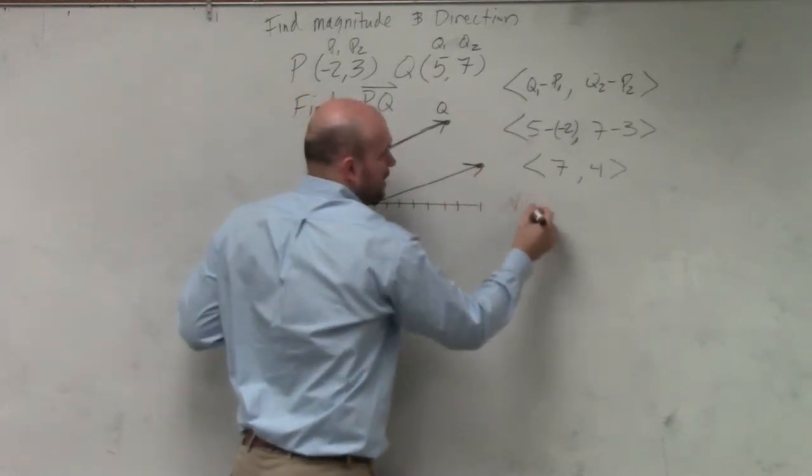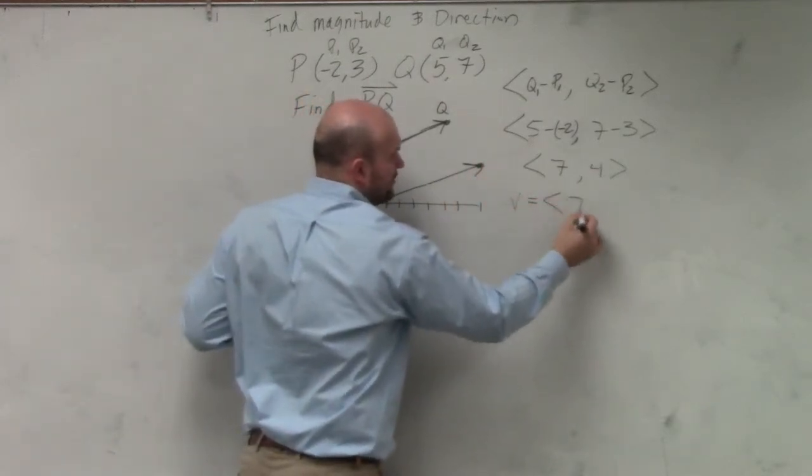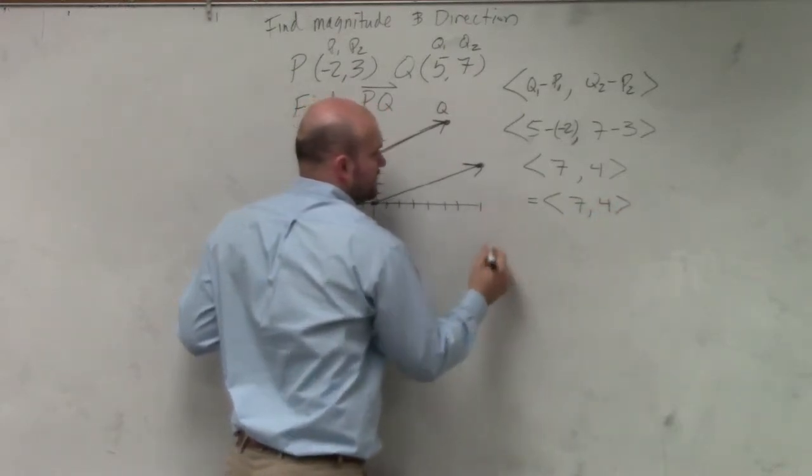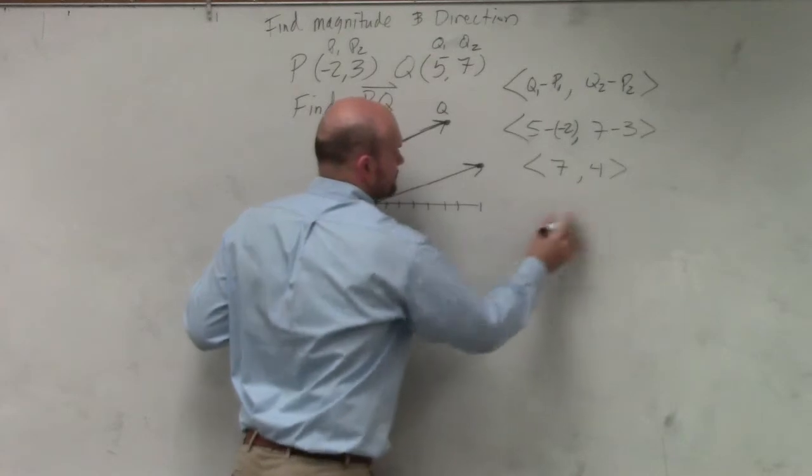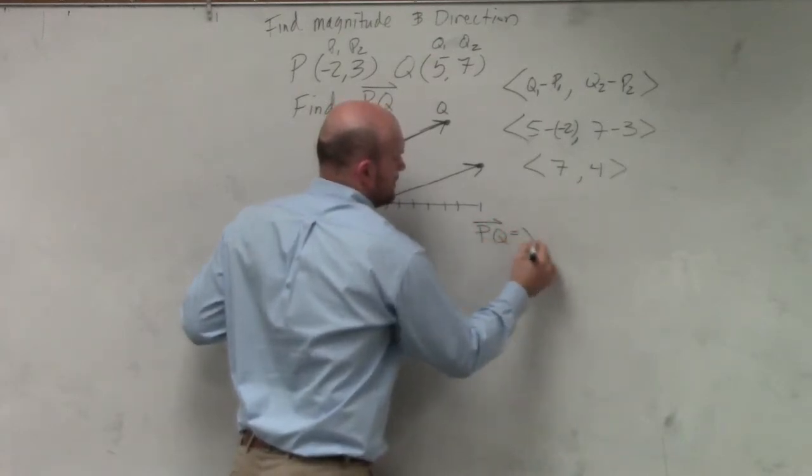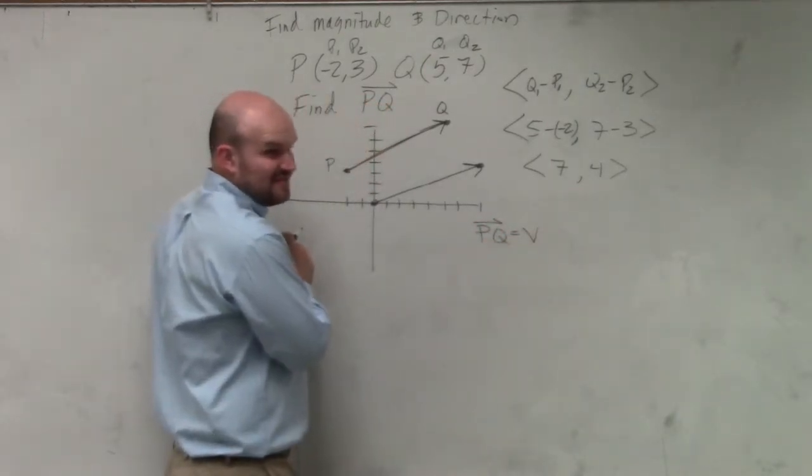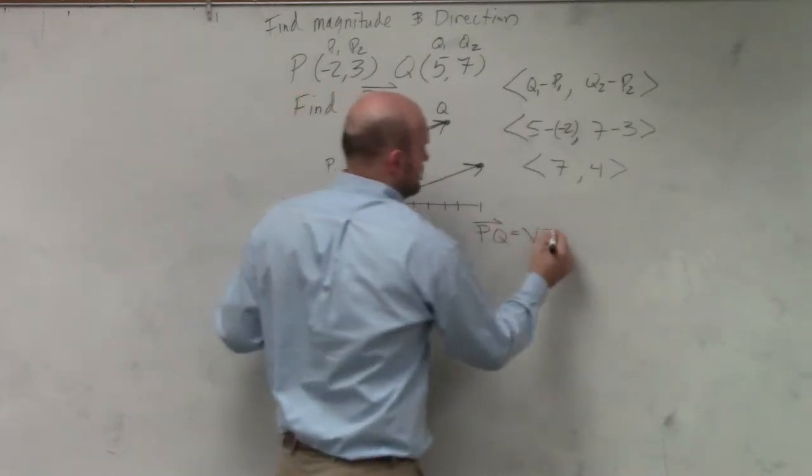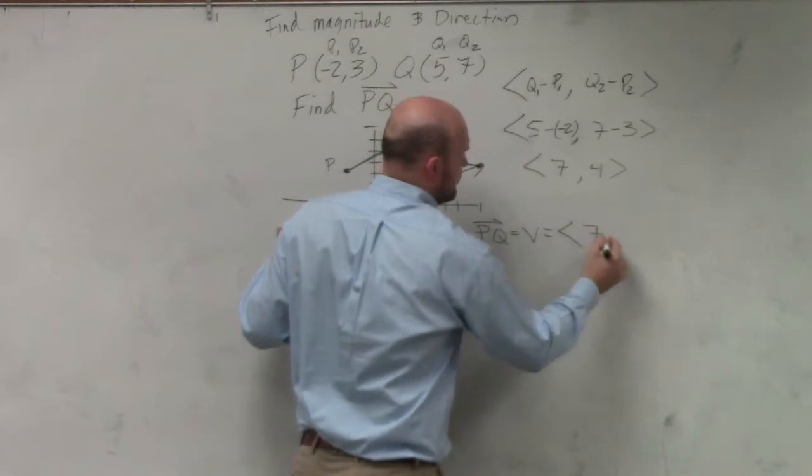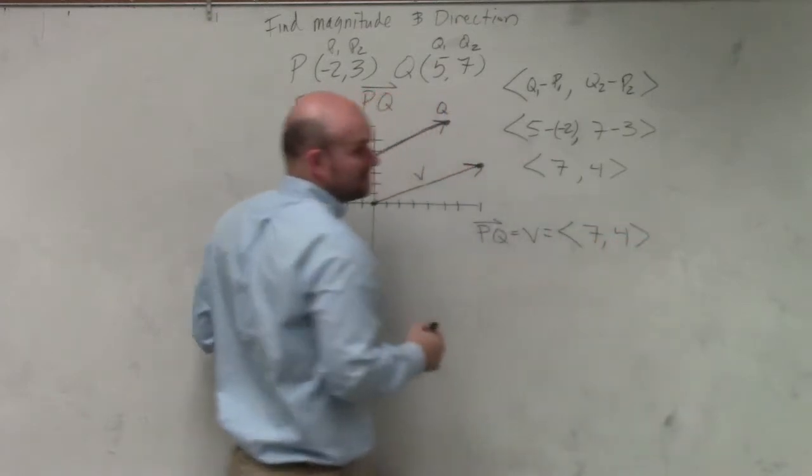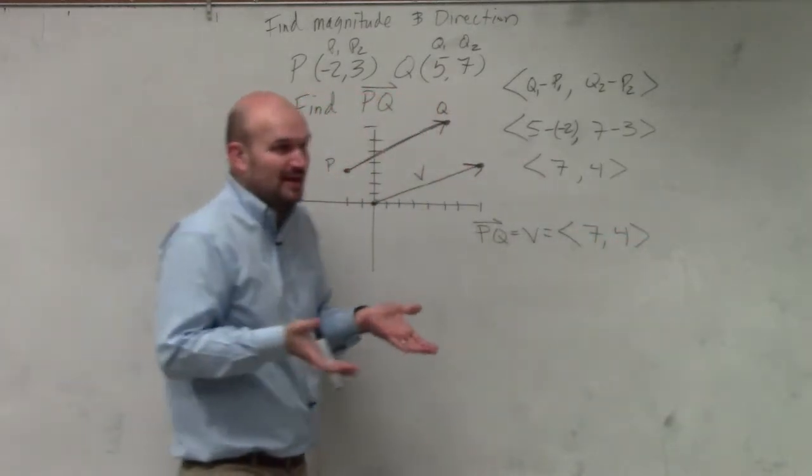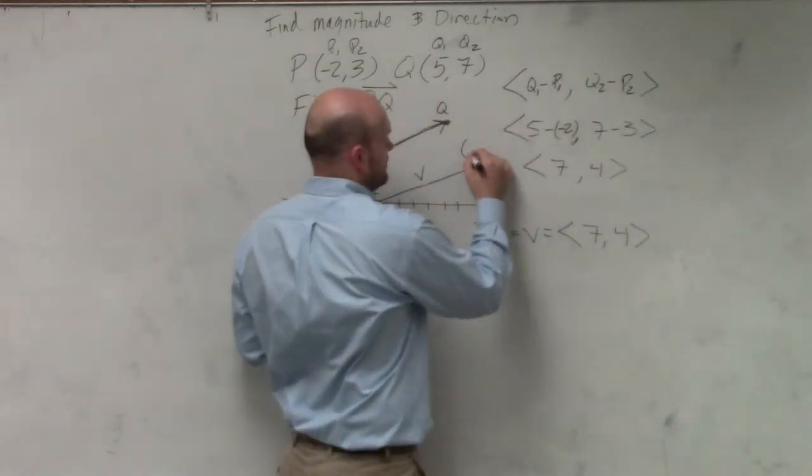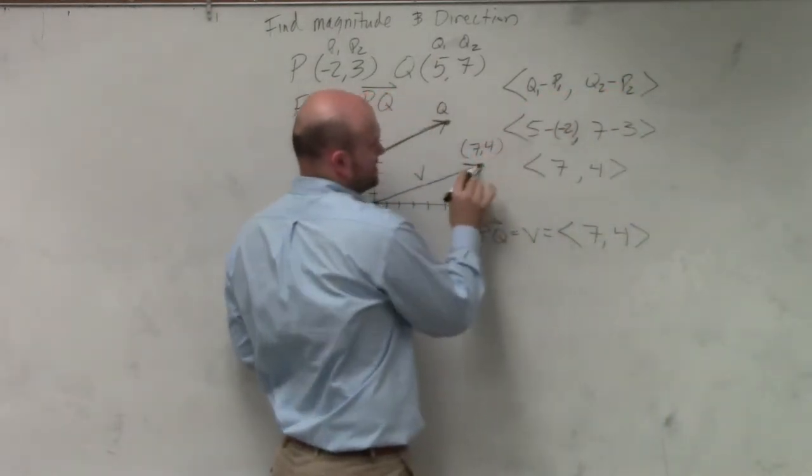This is what we call component form. And usually for component form, we give them letters, like V. This is vector V. And we just write component form like a coordinate point. But it's actually not a coordinate point at all. A coordinate point looks like that.